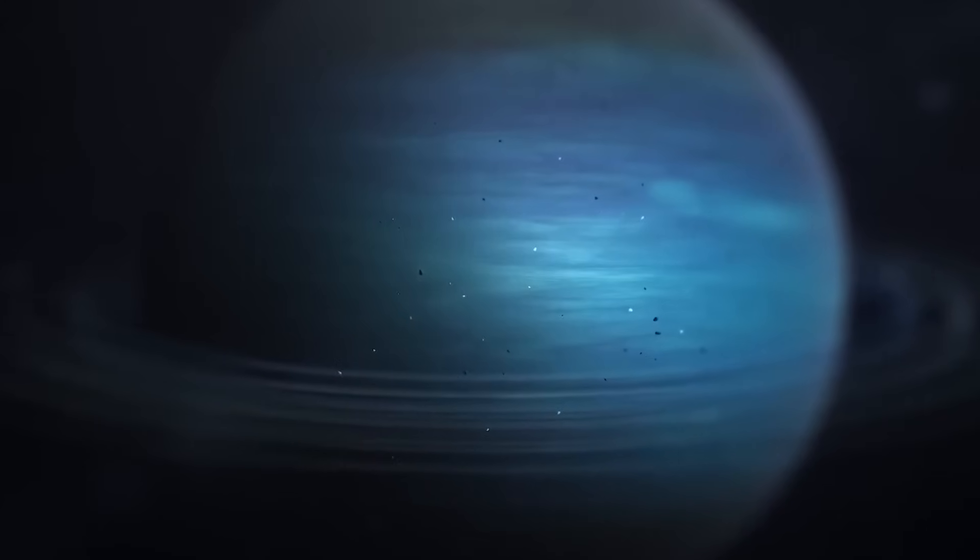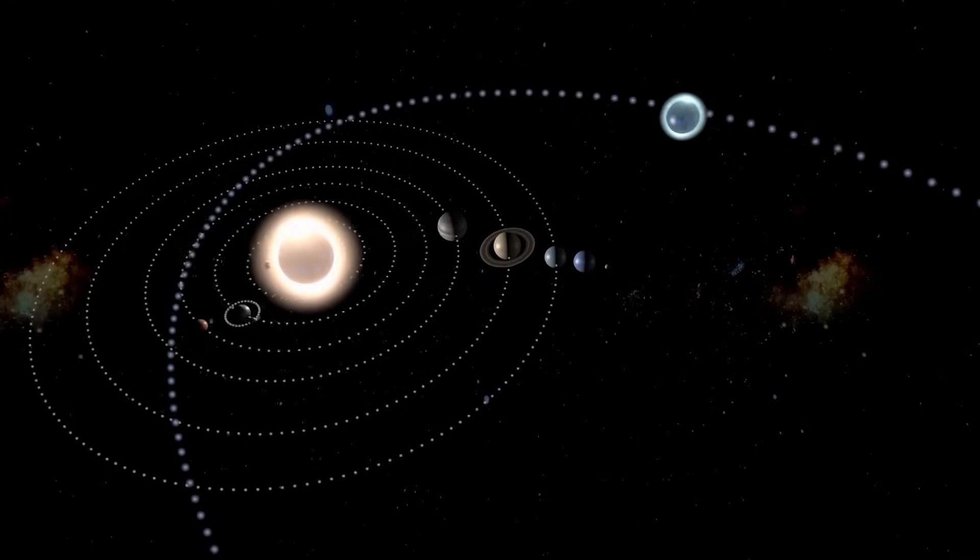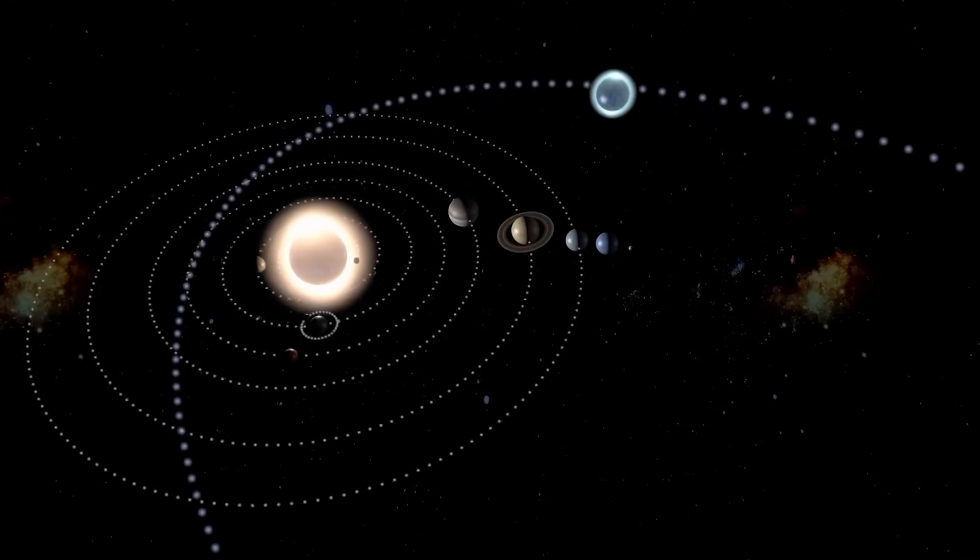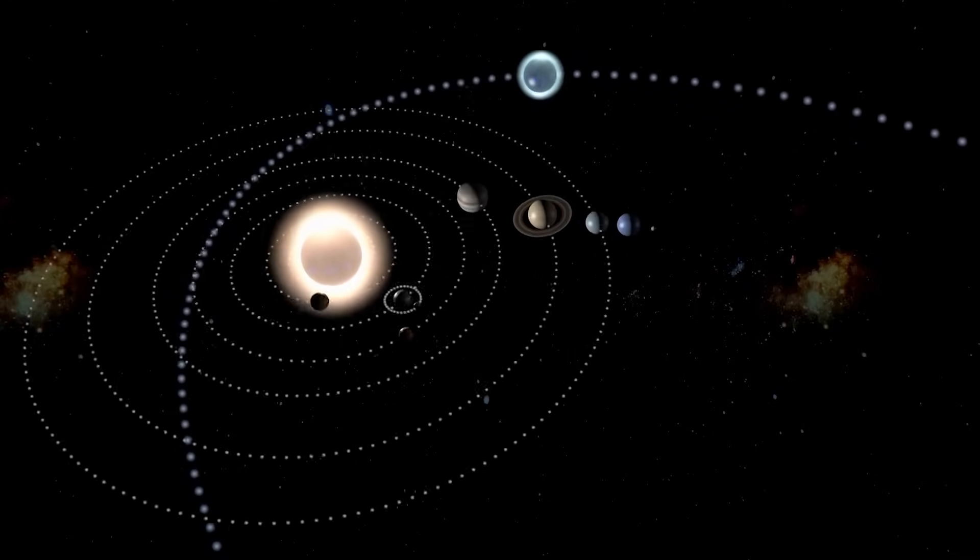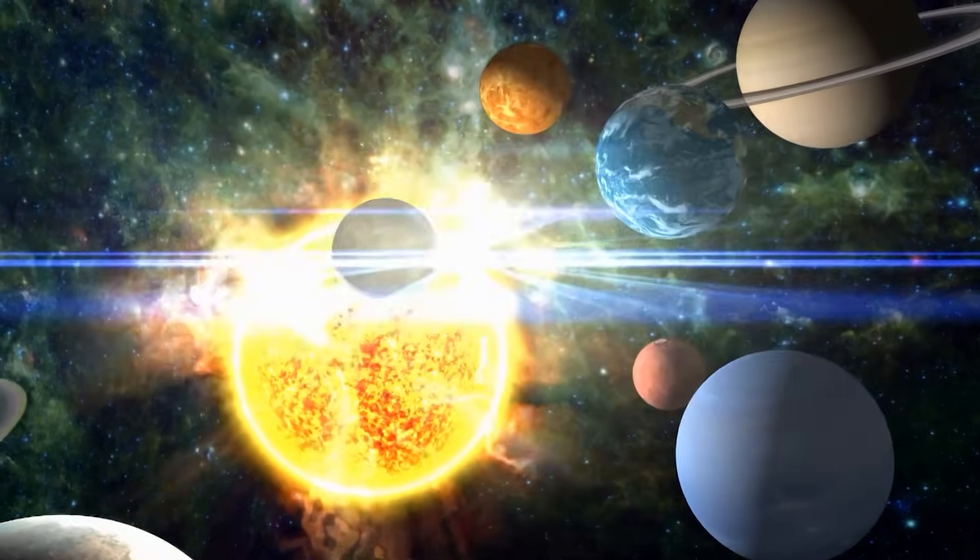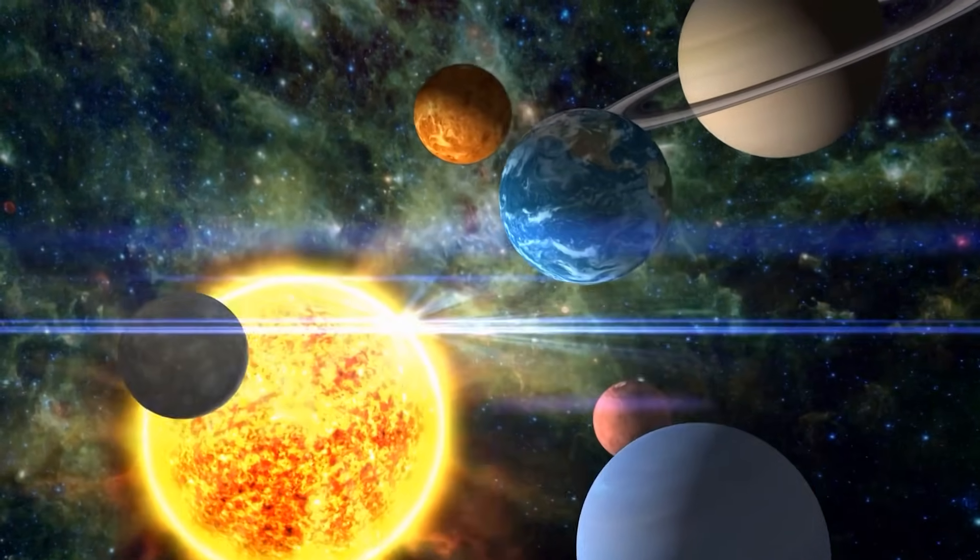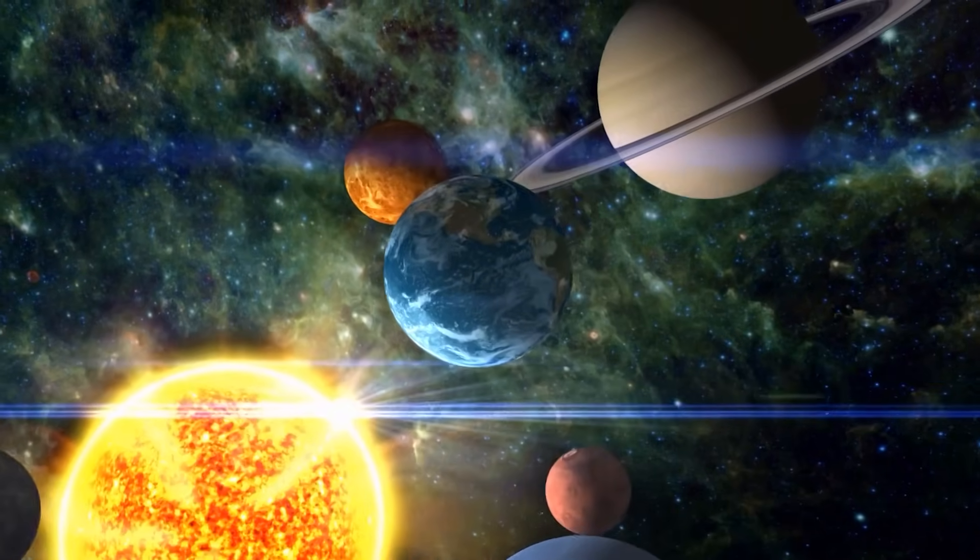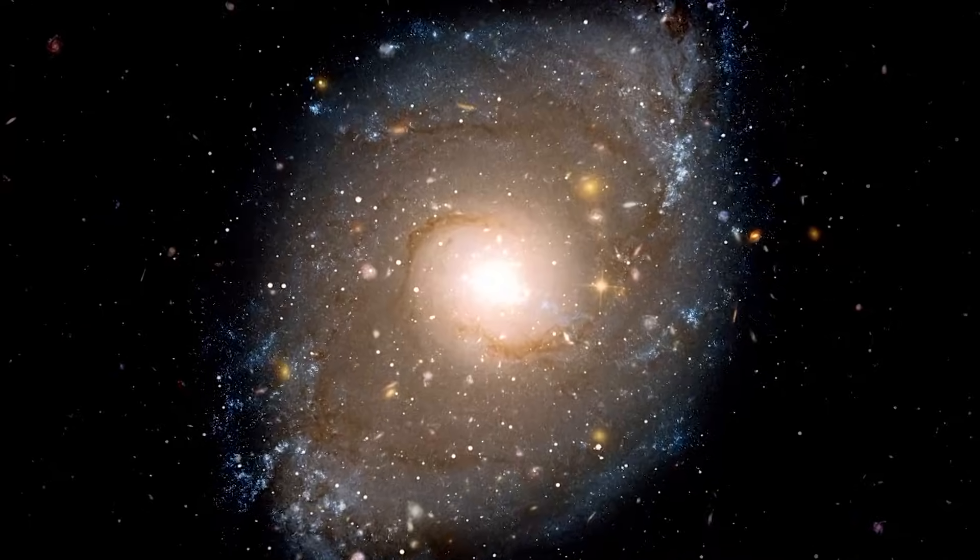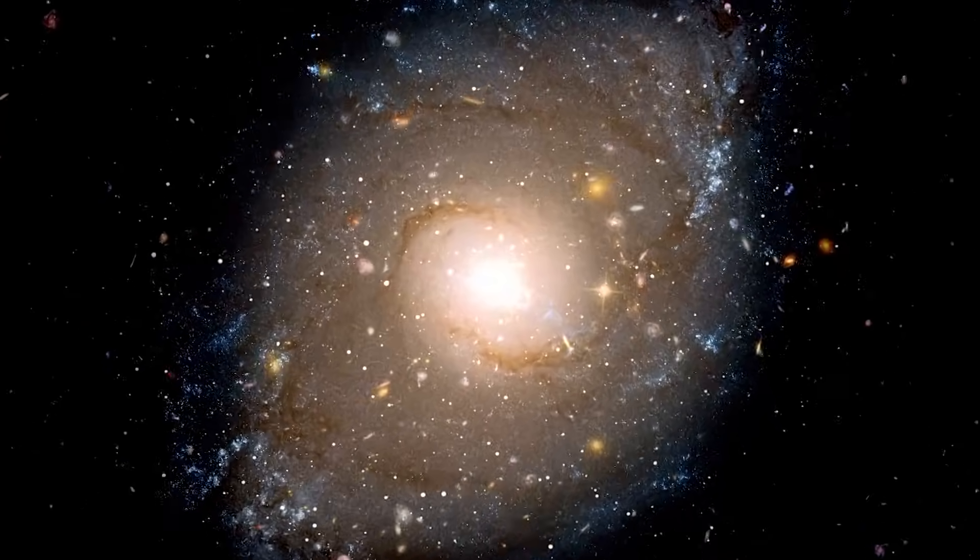The implications ripple far beyond Neptune itself. If our understanding of one of the closest outer planets can be so dramatically overturned, what does that say about the rest of the solar system? What about the exoplanets we routinely classify as Neptune-like? Webb was originally designed to study those distant worlds. Yet now it's clear we may not even understand the blueprint.